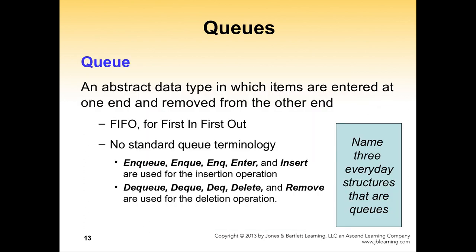There's another abstract data type called a queue. A queue is an abstract structure in which items are entered at one end and removed from the other end. This behavior is called FIFO — First In, First Out. In queue terminology, inserting an item is called enqueue, and deleting or removing an item is called dequeue.